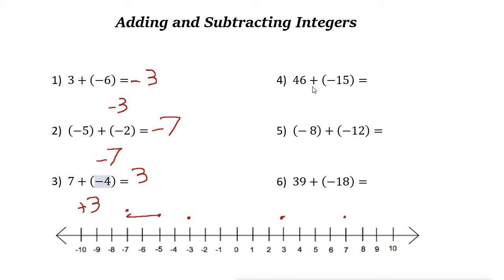Next: 46 plus negative 15. These two have different signs — 46 is positive and negative 15 is negative. So first find the difference: 46 minus 15 is 31. The bigger number is 46 and it is positive, so the answer is positive 31.